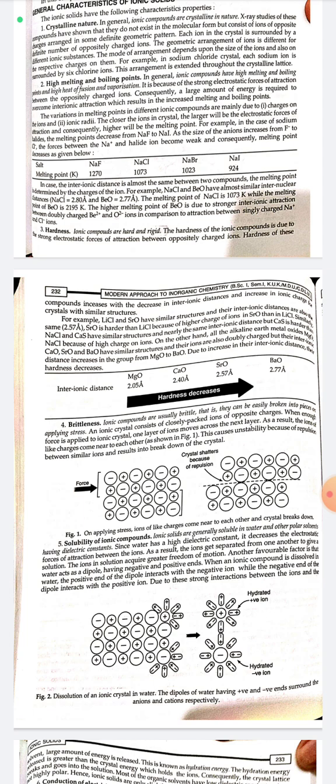Similarly, NaCl and calcium sulfide have similar structure and nearly the same interionic distance, but calcium sulfide is harder than NaCl because of the higher charge on the ions. On the other hand, in alkaline earth metal oxides, hardness decreases from MgO to BaO due to the increase in their interionic distance.